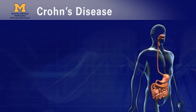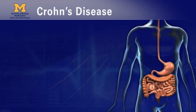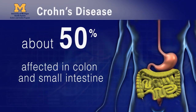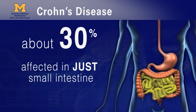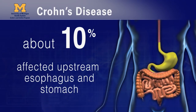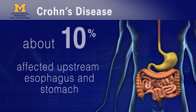People with Crohn's disease can be affected in different locations in the GI tract. About half are affected in both the colon and small intestine, about 30% in just the small intestine, and about 20% in just the colon. About 10% of these people are also affected further upstream, in the esophagus, stomach, or the beginning of the small intestine.